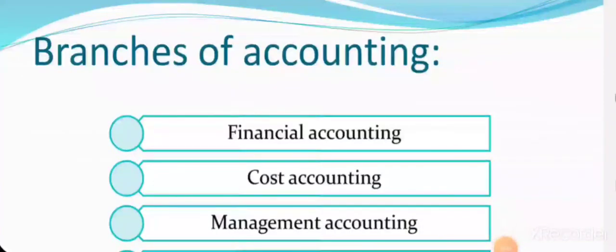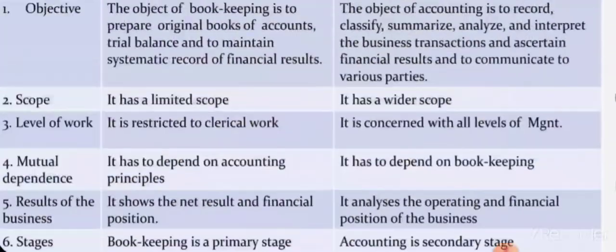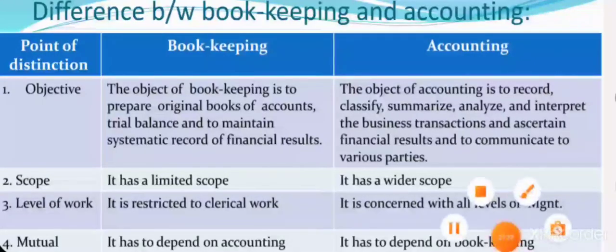There are many branches of accounting, but for academic purposes we focus on three main branches: financial accounting, which includes all financial statements; cost accounting, which involves the calculation of all kinds of costs; and management accounting, also called managerial accounting. We will see the differences and relationships between these three branches in upcoming classes. This concludes today's introductory class — please study all these topics, and if you have any difficulty, get back to me.